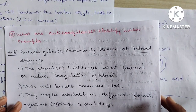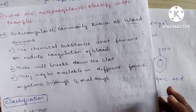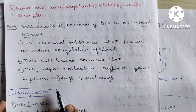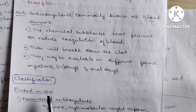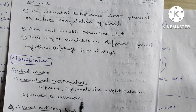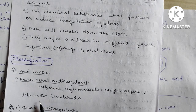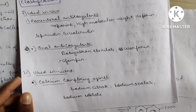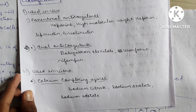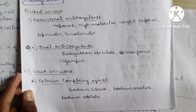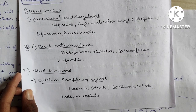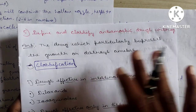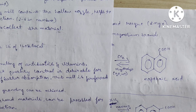Question 8: Classify anticoagulants with examples. Anticoagulants, commonly called blood thinners, are chemical substances that prevent or reduce coagulation of the blood. Classification: Parenteral anticoagulants — heparin, high molecular weight heparin, bivalirudin, lepirudin. Oral anticoagulants — dabigatran etexilate, warfarin. In vitro — calcium complexing agents: sodium citrate, sodium oxalate, sodium EDTA. These form a complex with calcium to stop blood clotting.